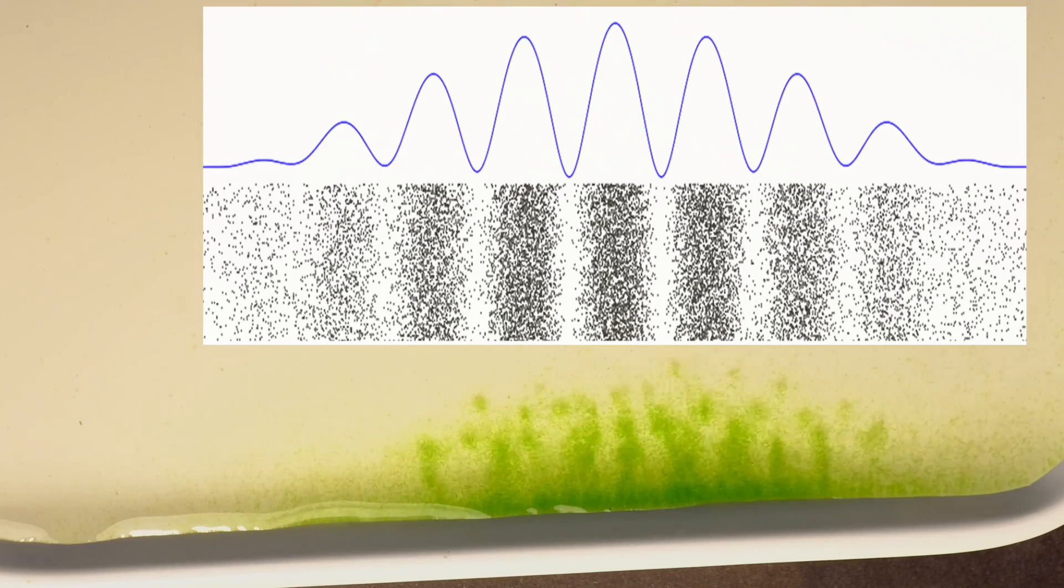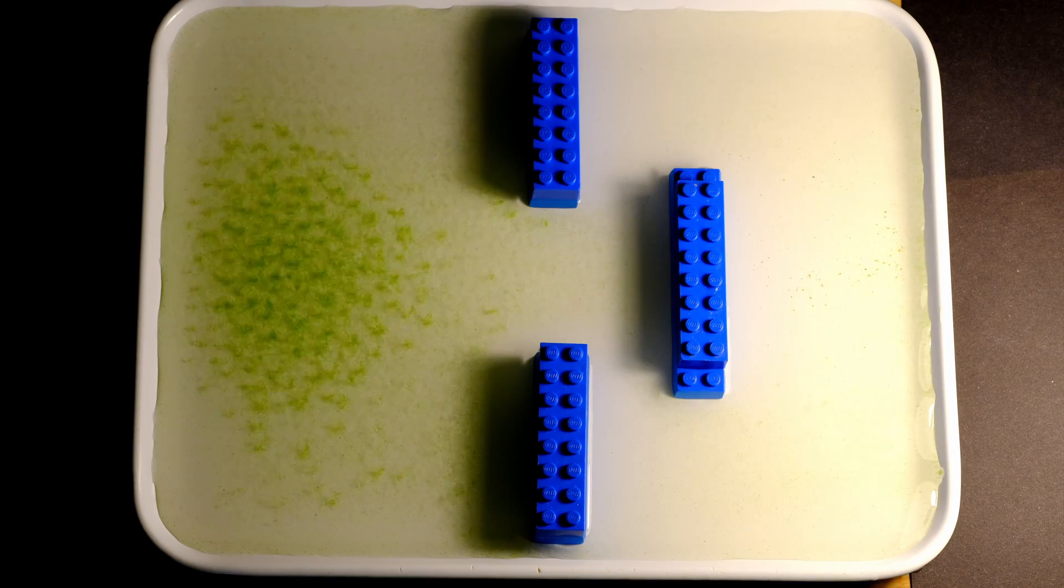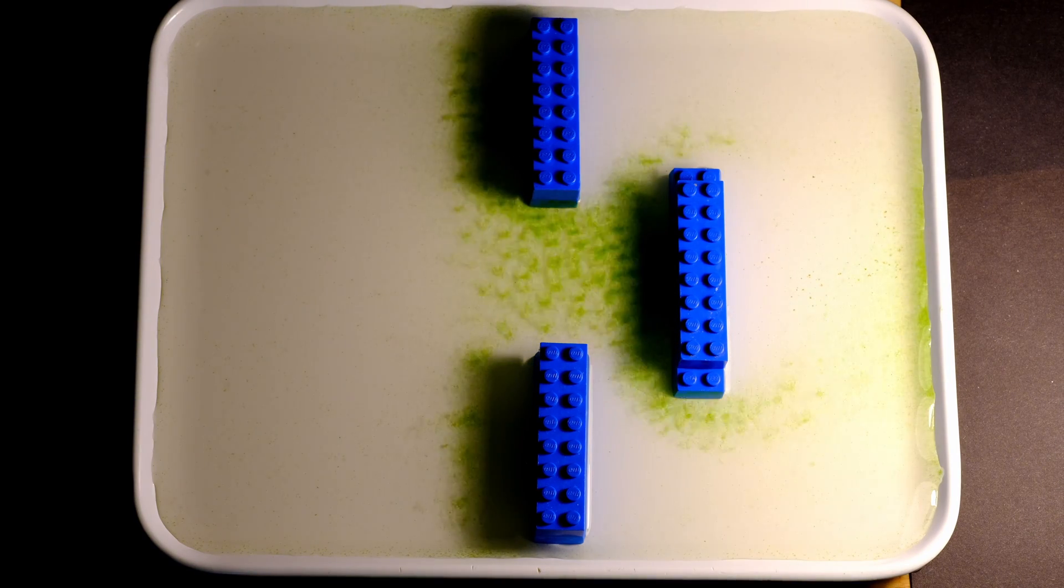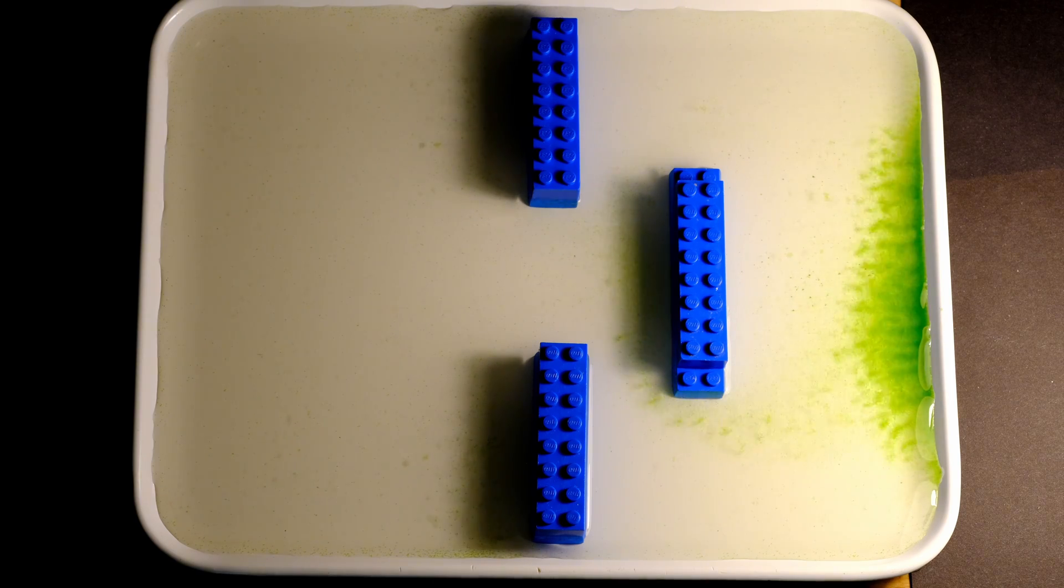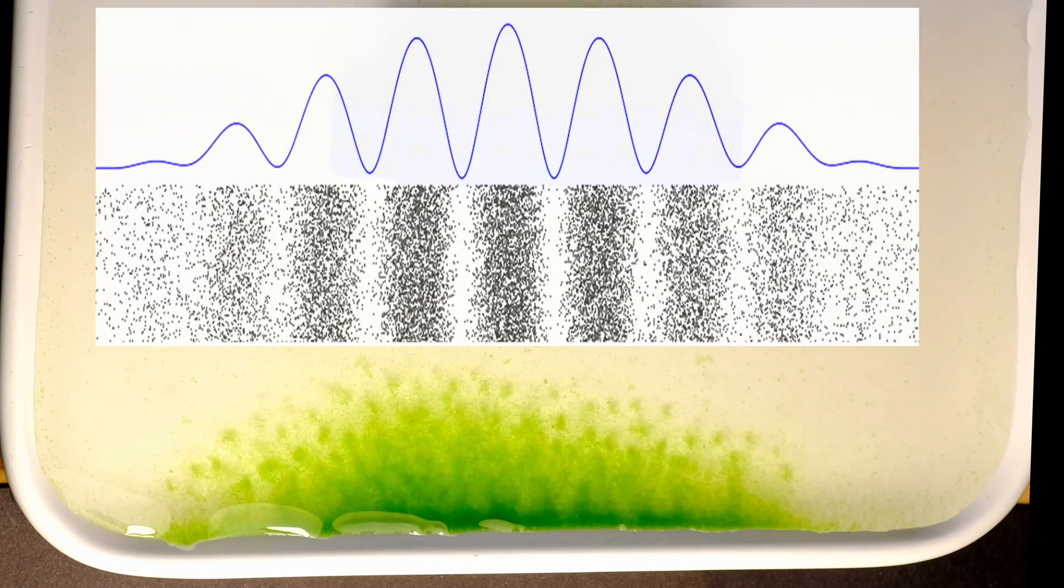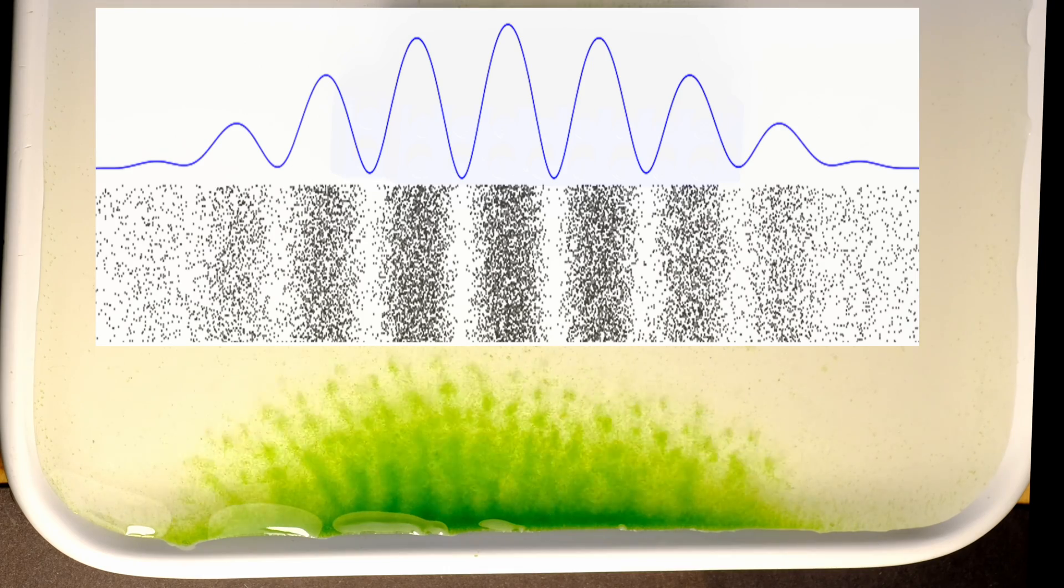And then, my mind was blown. Volvox forms an interference pattern just like particles would do in the classical double-slit experiment. What does that even mean? Does it mean Volvox behaves like a wave? I really don't know.